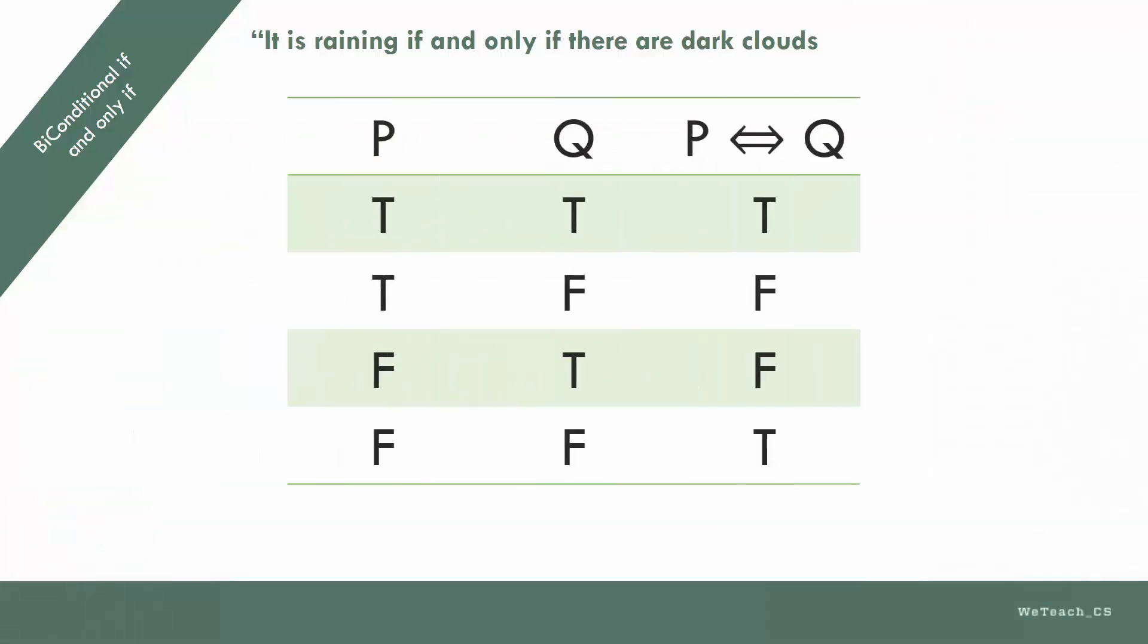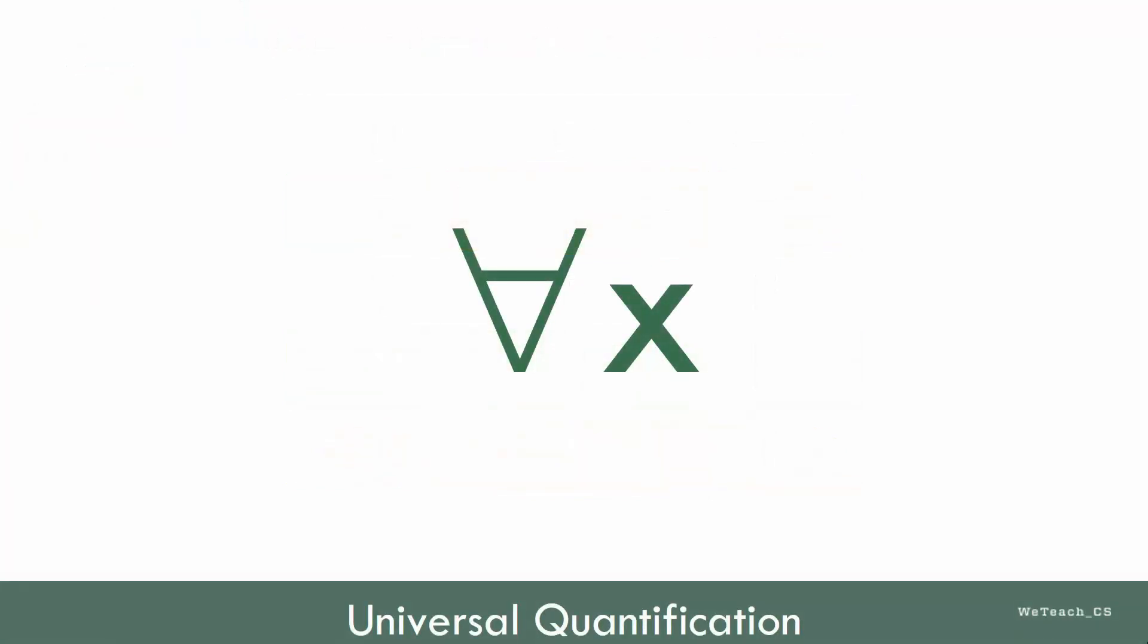Note again that a biconditional statement is true only when P and Q have the same value, either both true or both false. Study this table carefully. Now, let's move on to universal quantification.